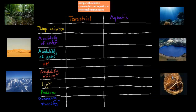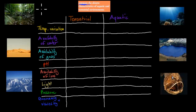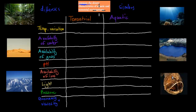So now I'll go over that dot point. It says: compare the abiotic characteristics — we have to compare the abiotic features of both terrestrial and aquatic. That verb is always the most important part of a dot point, because it tells you what you need to do. Compare means we need to look at differences but also at similarities — so how are they different and how are they similar in their aquatic and terrestrial abiotic features.